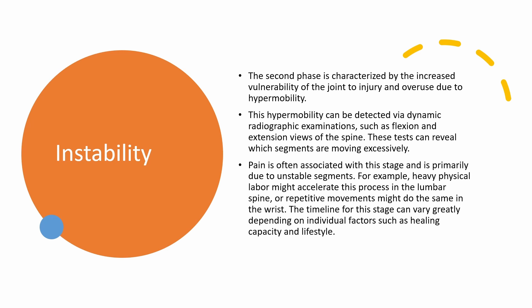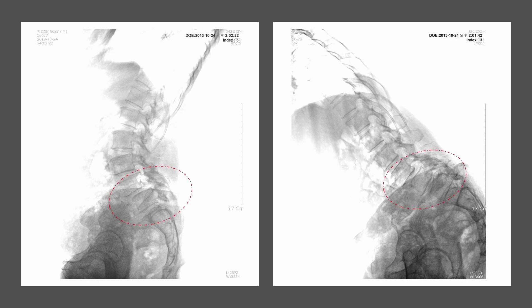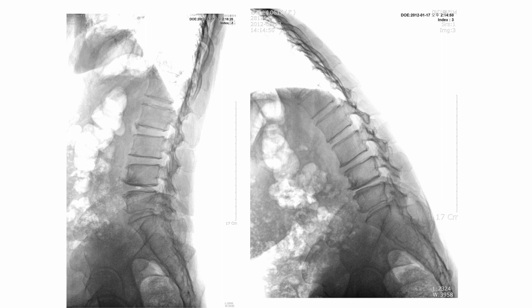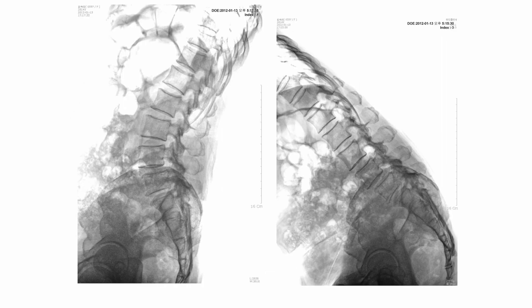The instability phase makes the joint more prone to injury and overuse due to hypermobility. This condition can be identified through dynamic radiographic examinations, revealing which segments are moving excessively. Pain is often associated with this stage primarily due to unstable segments. Certain lifestyles or activities, like heavy physical labor or repetitive movements, might accelerate this process.